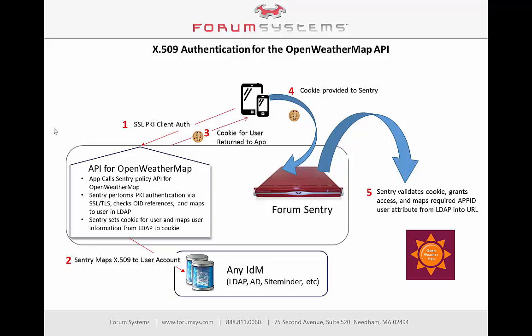After authentication succeeds, Sentry will generate a cookie for the user to enable single sign-on for this service, and map the user information to this cookie, so the app ID pulled from AD will be tied to that cookie for future use. The client will then make a second call with the cookie from the first call. Sentry will validate the cookie to establish who the user is, then extract the app ID from the cookie and inject it into the URL as a query parameter before proxying the call to the weather API. The weather service will validate the app ID and return the JSON weather data through Sentry back to the client. Sentry is essentially acting as a secure reverse proxy for this service.